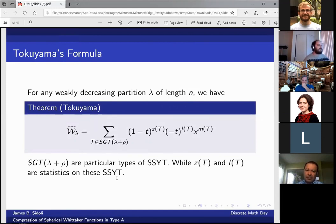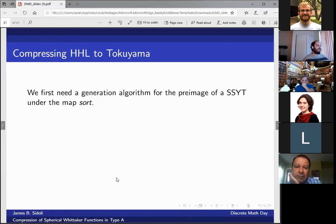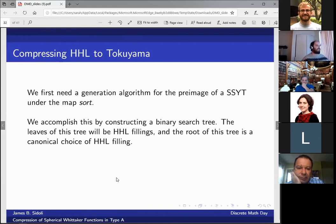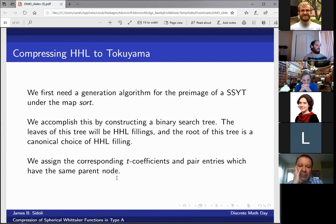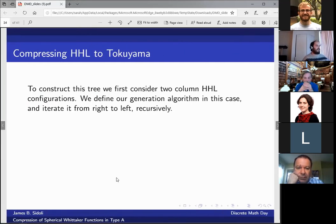And the way that we do it so that we have compression at each step is that we construct a generation algorithm for the preimage. We do this by constructing a binary search tree where the leaves of the tree are HHL fillings. And we define a canonical choice of HHL filling as being the root of the tree. We then assign t coefficients to the leaves of the tree and pair entries which have the same parent node. And this binary search is binary first of all because we're going to define our algorithm using transpositions of entries. So first though we have to define our generation algorithm in the case of two column HHL configurations. And then once we can generate every left column for a fixed right column, we can then iterate our algorithm from right to left recursively.